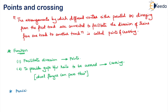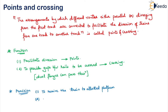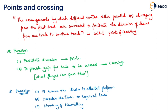Why are we providing points and crossings? First, a train approaching the railway station has to reach the allotted platform. So it is to receive the train to the allotted platform, also to dispatch the train to the required lane so that it reaches its destination station, and also for trains for shunting and marshalling so that they can reach the washing lanes, sidings, or loco sheds.